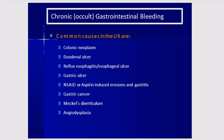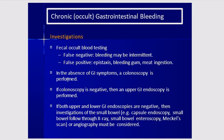Common causes of occult bleeding include chronic peptic ulceration, duodenal ulcer, esophagitis, and colorectal carcinoma. If colonoscopy is negative, perform upper GI endoscopy. If both are negative, investigate the small bowel — options include capsule endoscopy, small bowel follow-through X-ray, small bowel endoscopy, Meckel's scan, or intraoperative endoscopy.